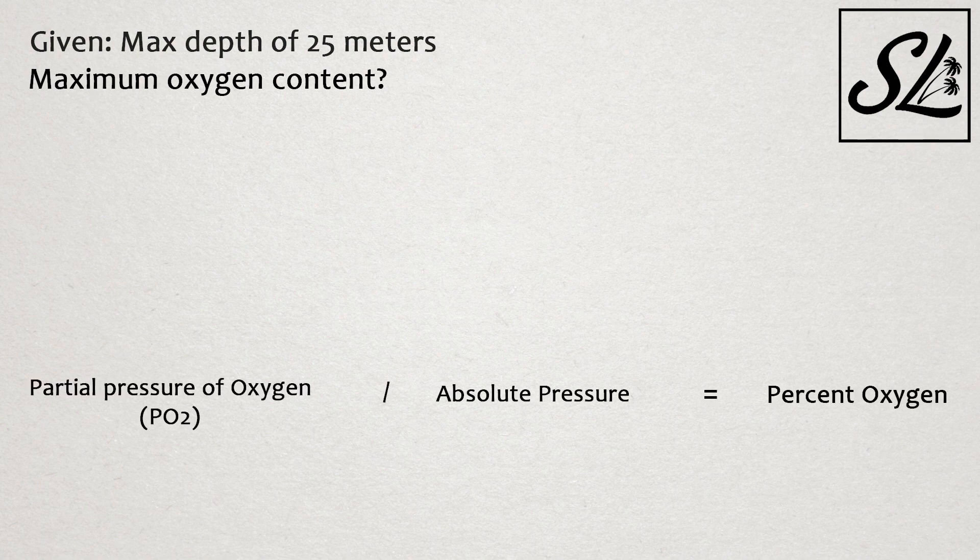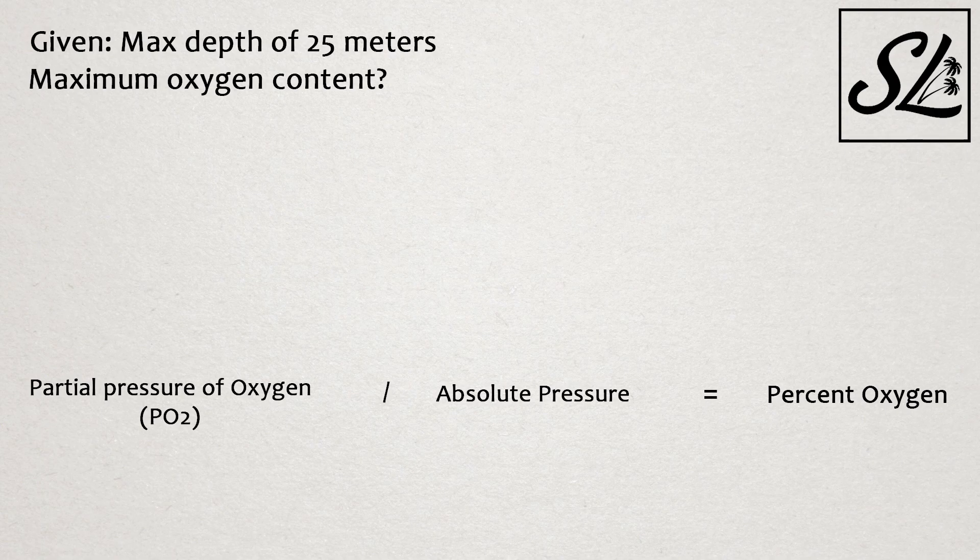So if for example, we wanted to dive to a wreck at 25 meters on nitrox, we would use this calculation here to determine the maximum oxygen content that we could carry with us. This formula requires you to divide the partial pressure of oxygen by our absolute pressure at 25 meters.